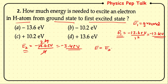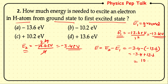The excitation energy equals E₂ − E₁ = (−3.4) − (−13.6) = −3.4 + 13.6 = 10.2 eV. So option C is the correct answer.